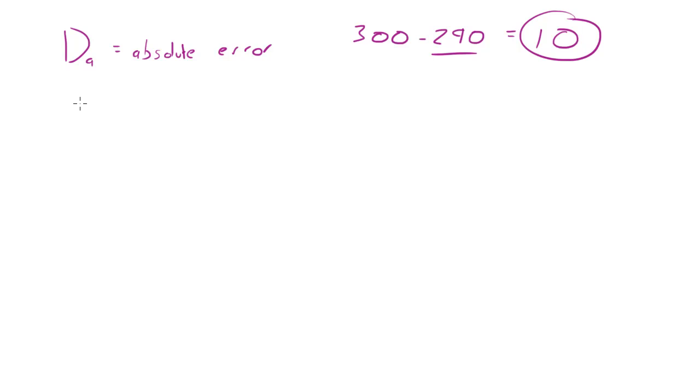Now the other variables we need is XM, and XM is not the radio, it means measured value or basically the value that you came up with. So in this case it would be 290 since that's the value that you came up with. And the last variable is XA equals actual value. This pretty much means the correct value or the value that it should be, so the correct weight of the cow was 300.